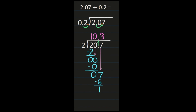I don't have anything left to bring down but I have a remainder of 1. Because I'm working with decimals, I can't just put a remainder of 1. So I'm going to add a 0 into my dividend and bring that 0 straight down — now I have 10 divided by 2. 10 divided by 2 is 5, 5 times 2 is 10, and 10 minus 10 is 0. So my quotient is 10 and 35 hundredths.